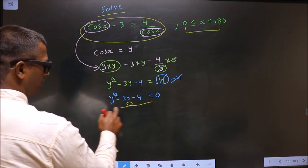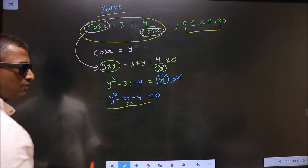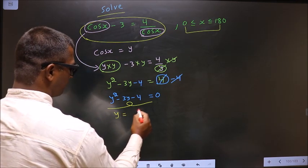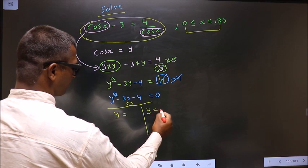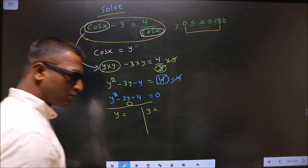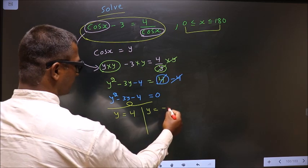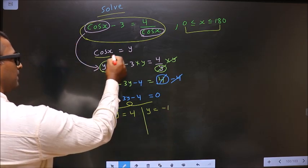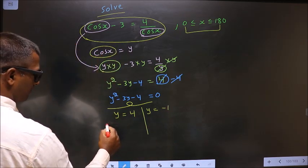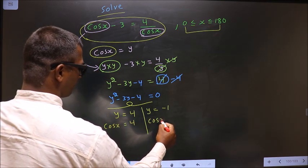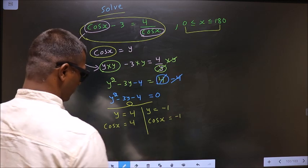Now you got quadratic. Put this quadratic in the calculator to get the values for y. You get y values to be 4 and minus 1. Now replace y by: cos x equal to 4, cos x equal to minus 1.